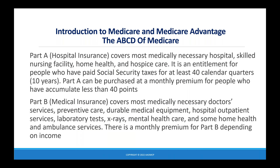Part A hospital insurance covers most medically necessary hospitals, skilled nursing facility, home health, and hospice care. It is an entitlement for people who have paid Social Security taxes for at least 40 calendar quarters, or 10 years — four quarters in a year, so 40 divided by four is 10. Part A can be purchased at a monthly premium for people who have not accumulated the necessary 40 calendar quarters.